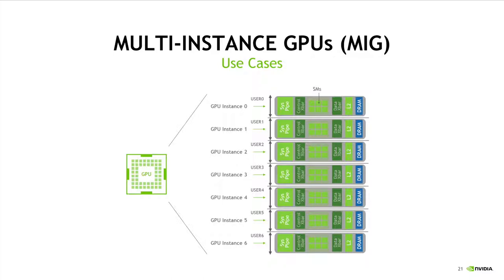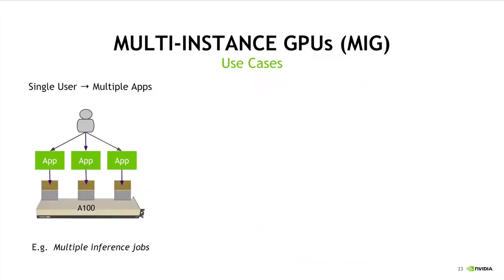So as I said before, MIG is a way of taking a full GPU and dividing it into a smaller set of what we call GPU instances, each of which has some amount of guaranteed memory and compute resources available to it. In general, MIG is useful anytime you have an application that doesn't require the full power of an entire GPU, but does want similar isolation guarantees provided by full GPUs. This might be a single user who wants to run multiple inference jobs or some sort of experimentation.